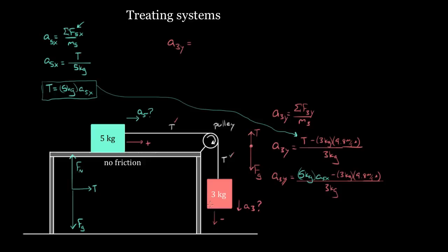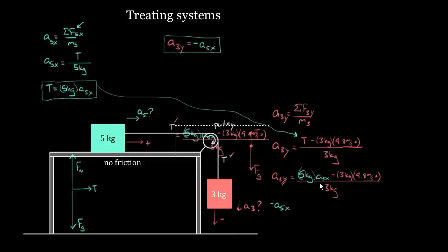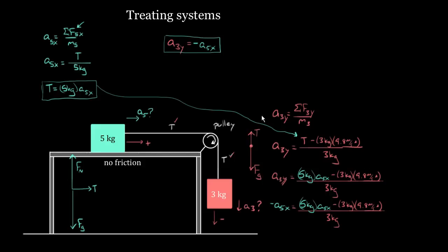So we can say that a_3y equals negative a_5x — they differ only by a negative sign. This is the crucial link. Now I can substitute into our equation: replace a_3y with negative a_5x. That gives us: negative a_5x equals (5×a_5x minus 29.4 newtons) divided by 3 kilograms. Now I have one equation with one unknown — just a_5x on both sides — so I can solve for it.